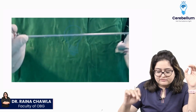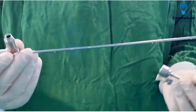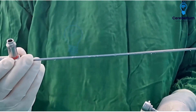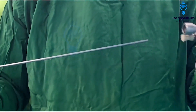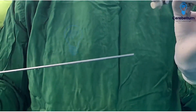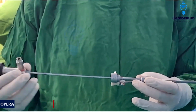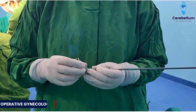So let's see the video. That's the scope in my hand, and in the other hand I'm holding the sheath. So I'm introducing the scope inside the sheath. This is an operative hysteroscope which I am assembling.